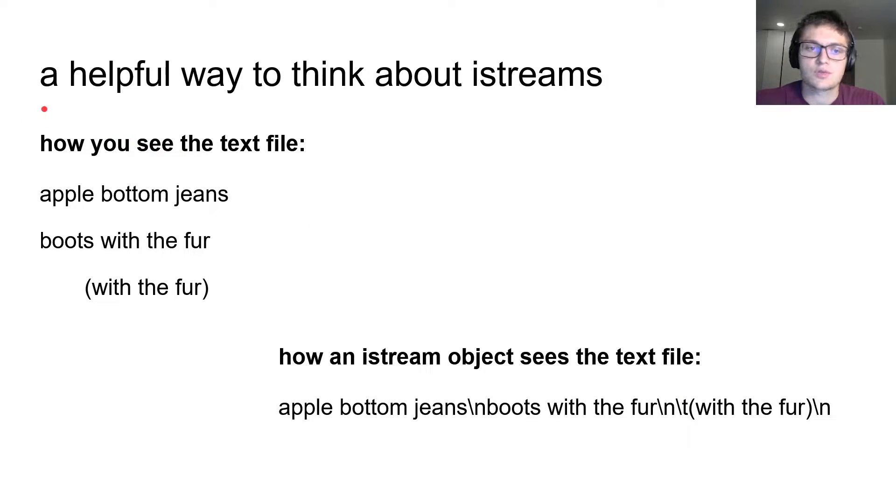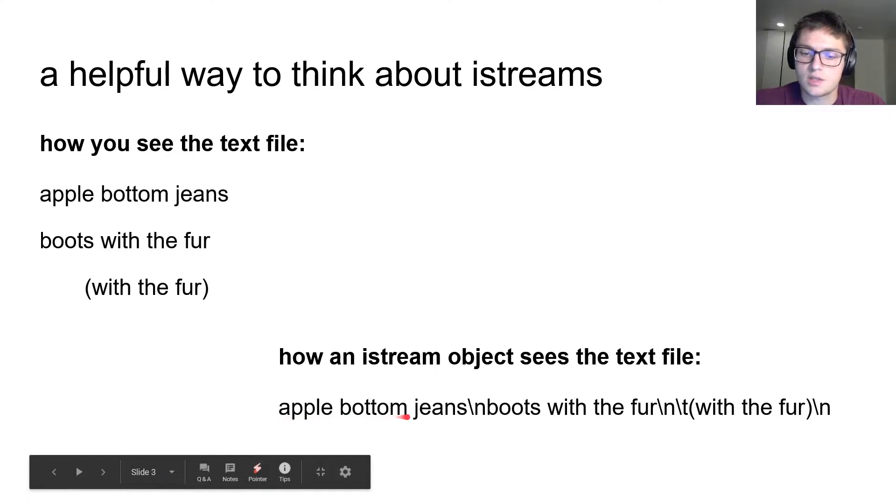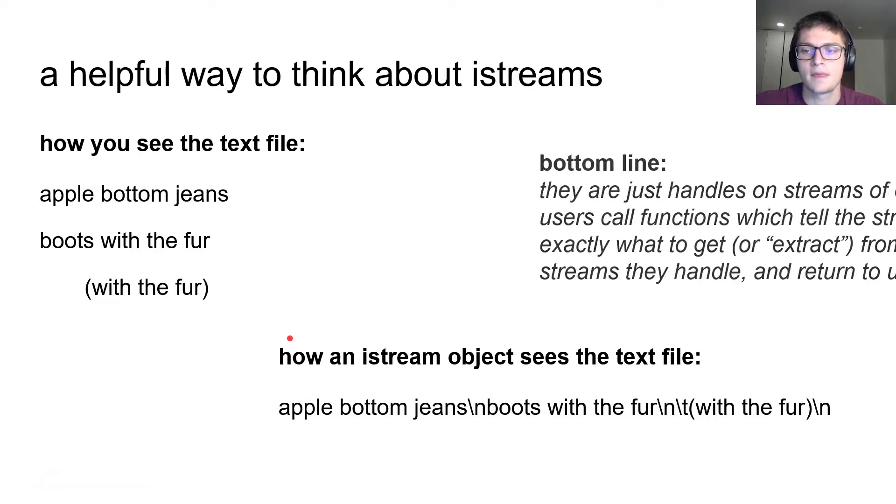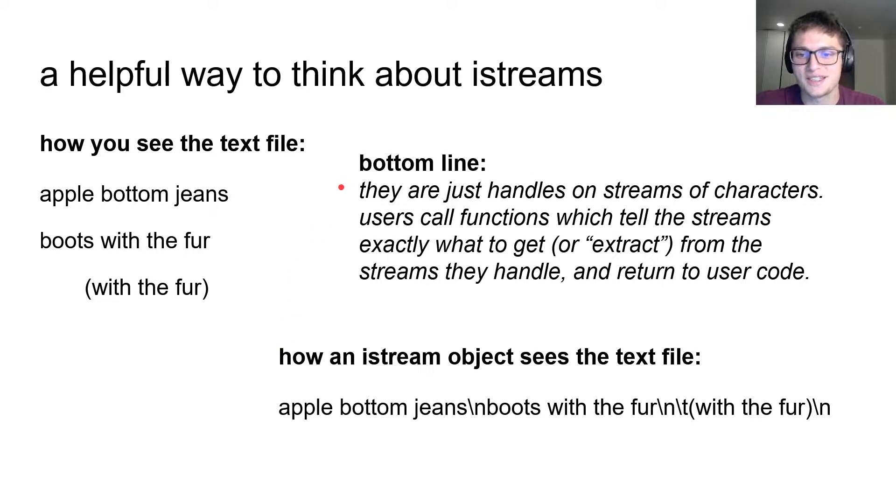First things first though, a helpful way to think about iStreams. We see the text file like this, normal file, we've got words, maybe numbers, just characters, there's some newlines, there's some tabs, there's formatting. But we can think of an iStream as viewing this really as just one long sequence of characters. And everything in the stream is a character, even a newline, even a tab. And really thinking of it as one long string like this can be helpful for understanding why we went wrong in that previous example. I want to be clear though that this is not how iStreams are actually implemented. This is just a helpful way to think about them. The bottom line is iStreams are just handles on streams of characters. We ask the stream to get some data and it removes that data from the stream and returns it to us. Pretty easy things, you probably already know this from 280.